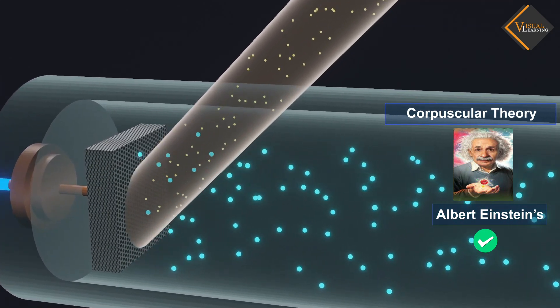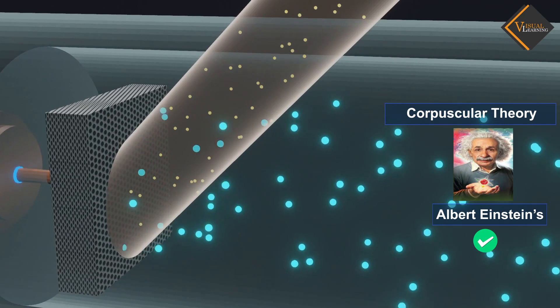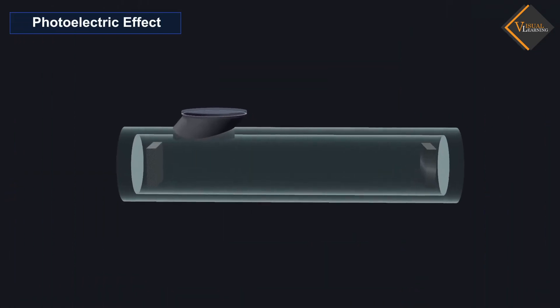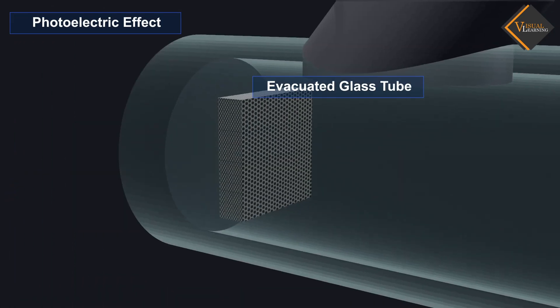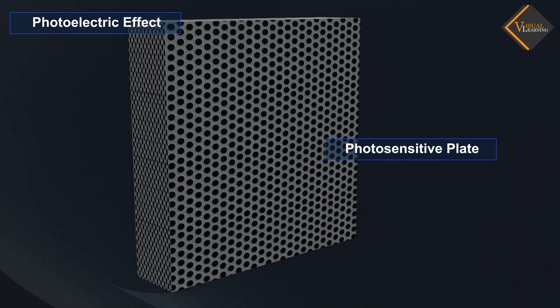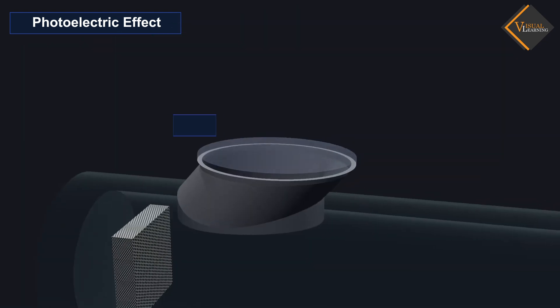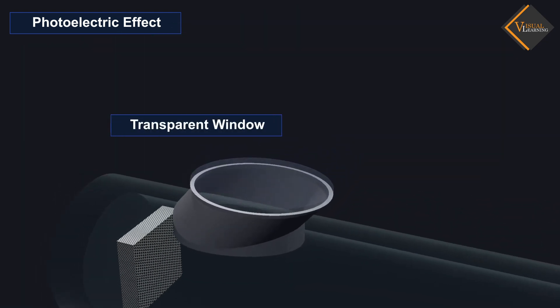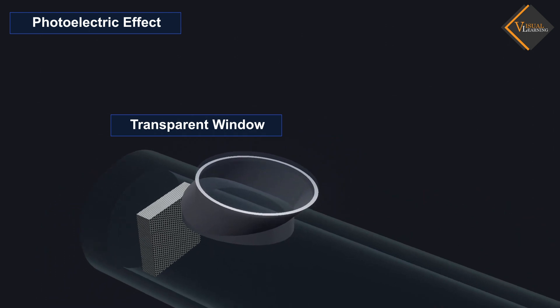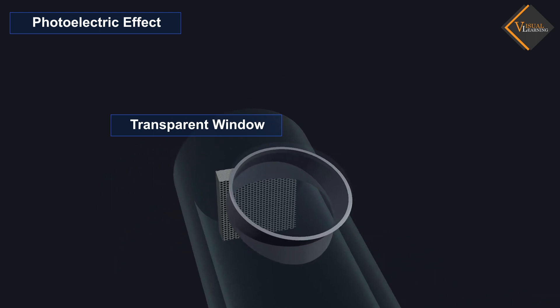Now, let's understand this phenomenon in detail. In the animation, we see an evacuated glass tube with a photosensitive plate at one end and a metal plate at the other end. A transparent window is placed above the glass tube which filters the light and allows only a particular wavelength of light to pass through.